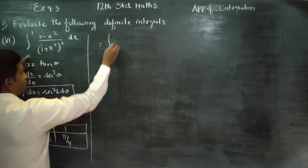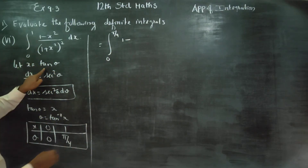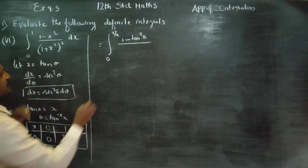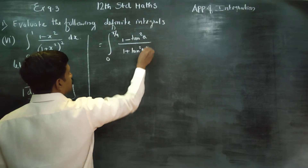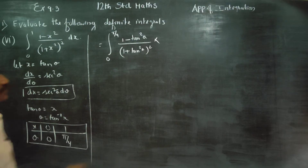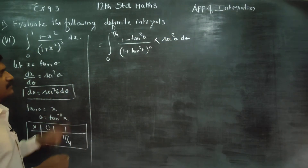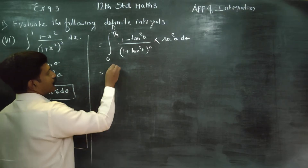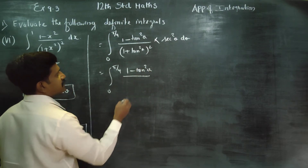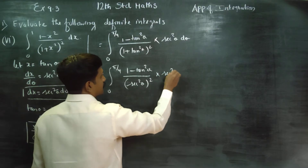The integral becomes: integration from 0 to pi by 4 of (1 minus tan square theta) divided by (1 plus tan square theta), into sec square theta d theta. Note that 1 plus tan square theta equals sec square theta.